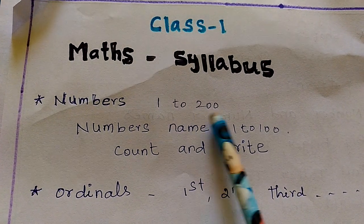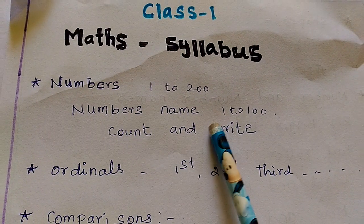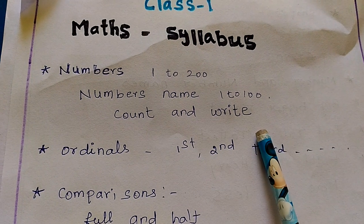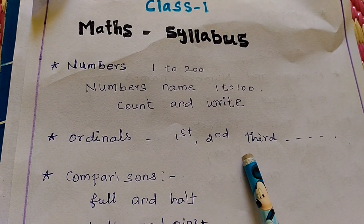Numbers 1 to 200. Numbers name 1 to 100. Count and write. Ordinal numbers: 1st, 2nd, 3rd.